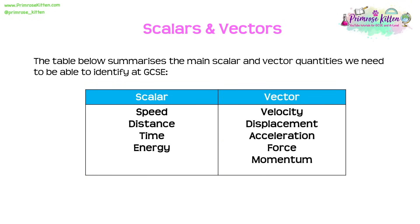At GCSE we learn about many different things. I've got a little table here to summarise which quantities are scalar and which are vector. Speed is a scalar, whereas velocity is a vector. Distance is a scalar, whereas displacement is a vector. Time and energy are both scalar quantities, because they just have a size associated with them, not a direction. Whereas acceleration, force and momentum are all examples of vectors.